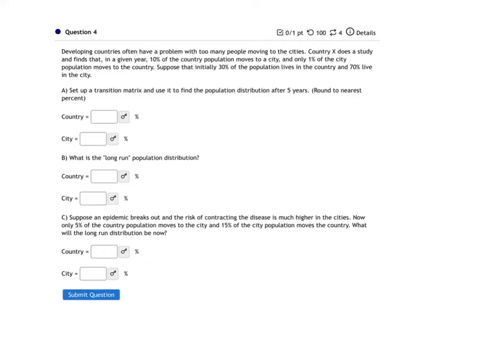Hello everyone, Mr. Geiselhardt here, and now we're going to take a look at number four on the Markov Chain assignment, which is assignment number six. It says, developing countries often have a problem with too many people moving to the cities. Country X does a study and finds that in a given year, 10% of the country population moves to a city, and only 1% of the city population moves to the country. Suppose that initially, 30% of the population lives in the country and 70% lives in the city. Set up a transition matrix and use it to find the population distribution after five years, round to the nearest percent.